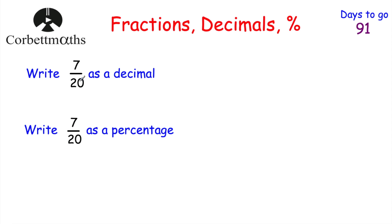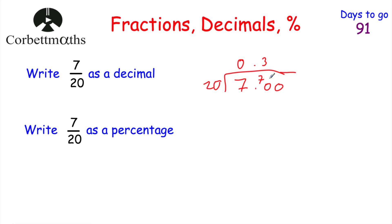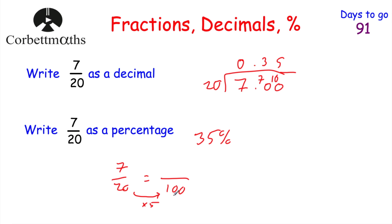Here are some for you to do yourself: write 7 twentieths as a decimal and as a percentage. Pause the video and try these. To write 7 twentieths as a decimal, we do 7 divided by 20. How many twenties go into 7? Zero remainder 7. How many twenties go into 70? Three remainder 10. How many twenties go into 100? Five. So that's 0.35. So 7 twentieths as a decimal is 0.35, and as a percentage that's 35%. Alternatively, multiply numerator and denominator by 5: 7 times 5 is 35, giving 35 out of 100, which is 35%.